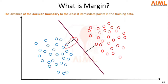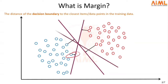Suppose if we have any other random decision boundary, then for that decision boundary, this is going to be the margin. If we have yet another decision boundary, then this is going to be the margin of that boundary. So that is what margin is.